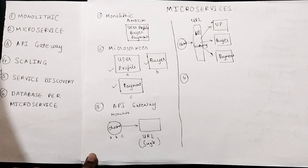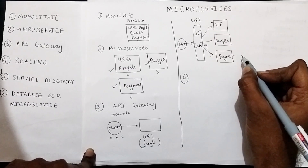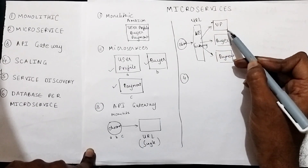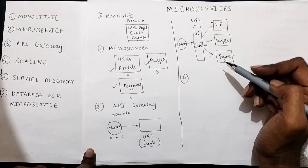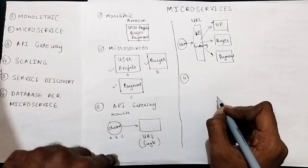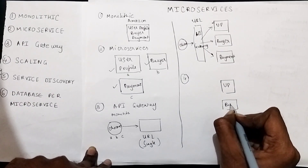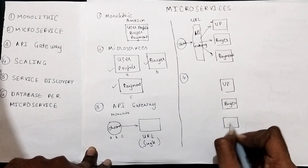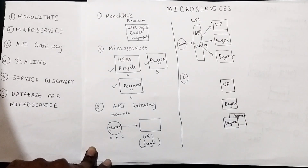With a monolithic application, you have to deploy the entire application as one entity. Consider this scenario: we are getting a lot of requests for only payments but not many requests for user profile. How do you scale only the payment portion of the monolithic application? That was not possible with a monolithic application. That is one of the advantages of microservices. In microservices, you can deploy one instance of user profile, one instance of buyer, but multiple instances of payment. So only the payment service can be scaled independently. That is why we deployed two instances of the payment microservice and only one instance each of user profile and buyer.